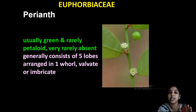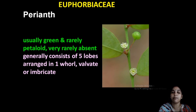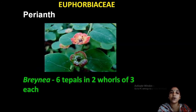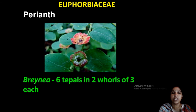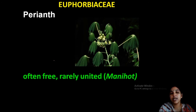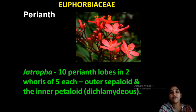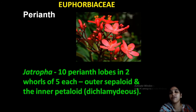This is the perianth with stamens — the male flower. In Breynia, the perianth is six, in two whorls of three each — three plus three. Perianth members are often free, rarely united. Usually free in Manihot — that is tapioca. In Jatropha, perianth is in two whorls of five plus five. The outer five are sepaloid and inner five are petaloid.